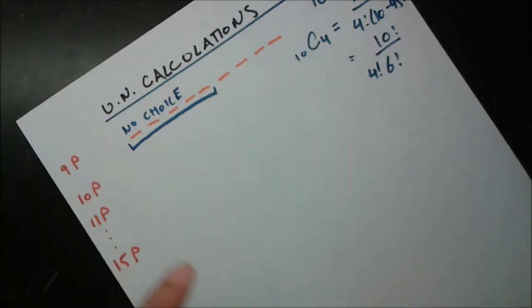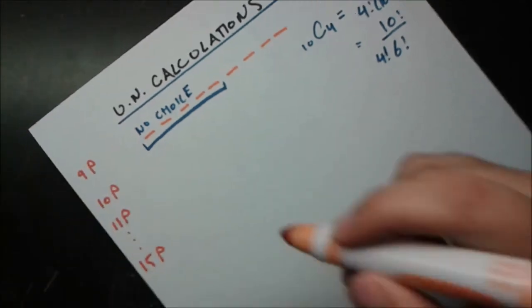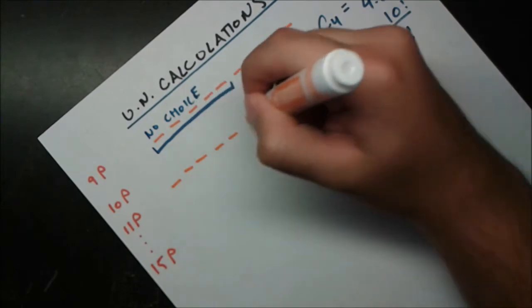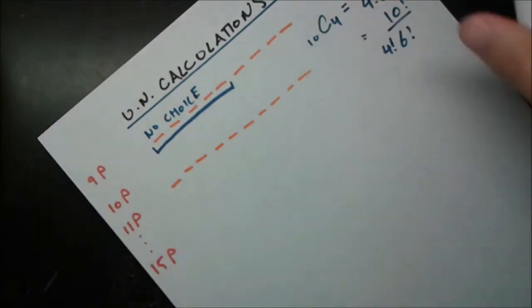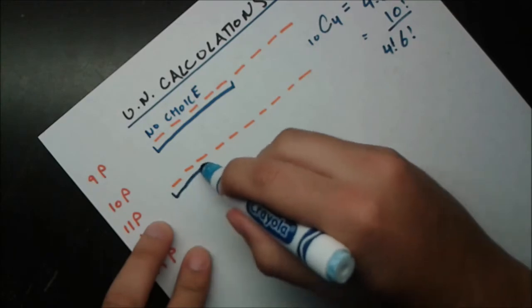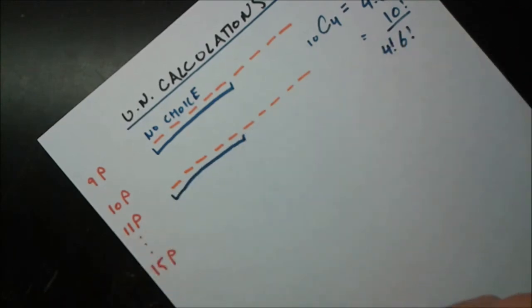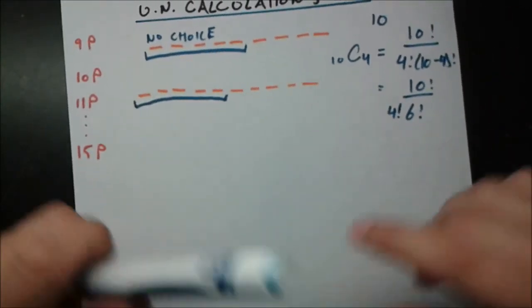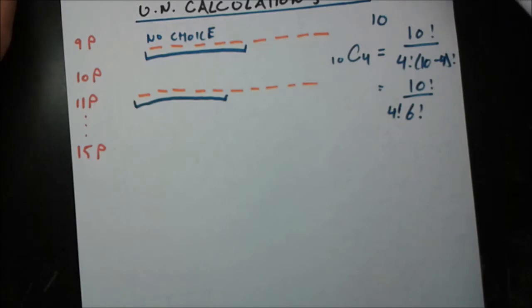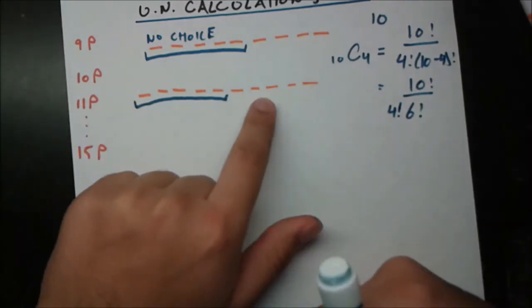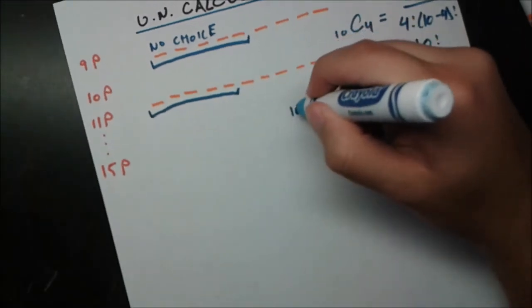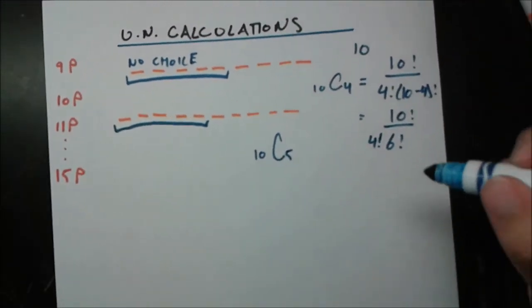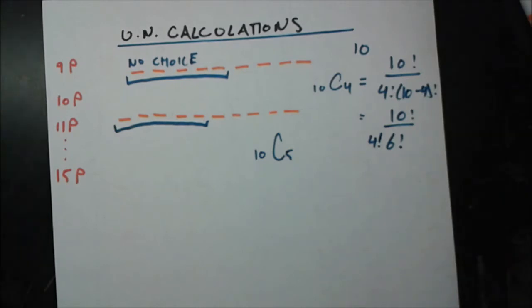Now let's look at the 10-player case. We now have 10 seats to fill. The first five seats still have to be filled by the permanent nations — no choice there. We do have a choice for the last five seats: there are 10 nations to choose from and we need to choose five of them. So we'd do 10 choose 5, calculated using the same combination formula.